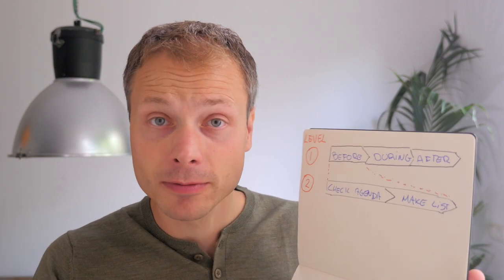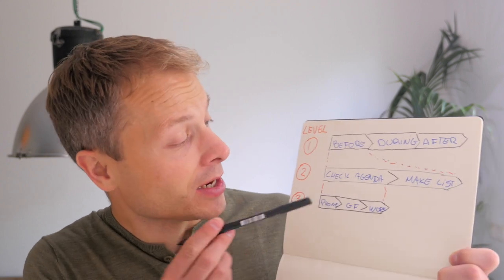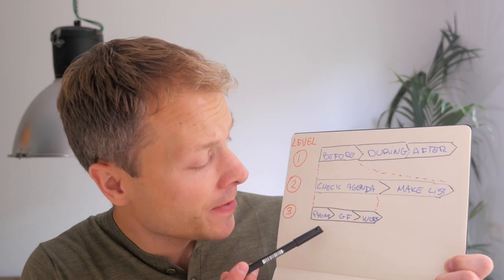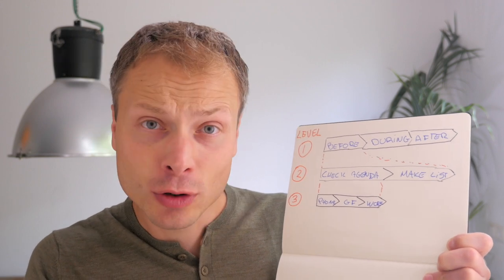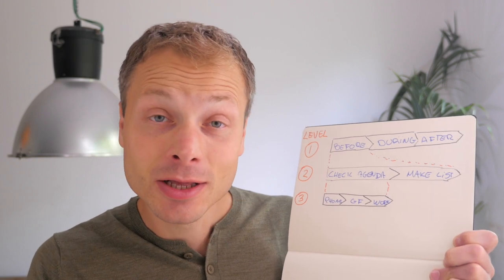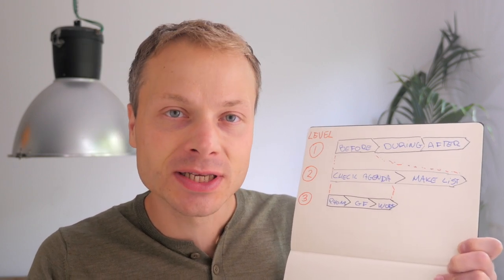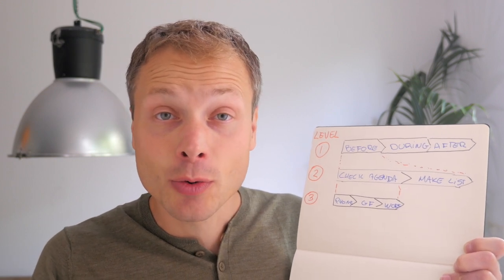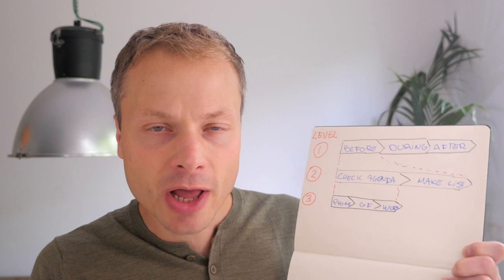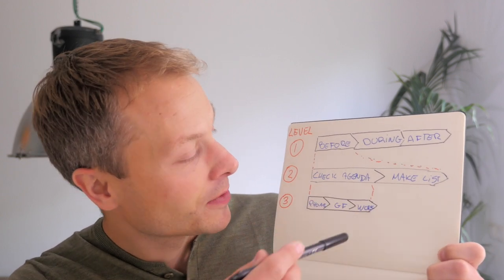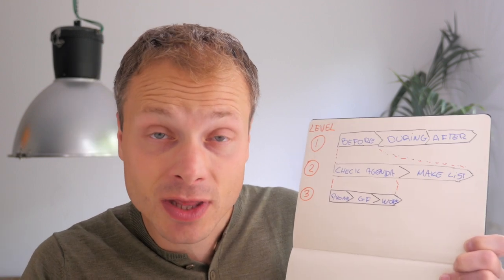Level three is about breaking down level two into even smaller bits. In our grocery example, if we break down 'check agenda,' that activity might contain steps like: first, you check your phone to see your own calendar; then you consult with your girlfriend or boyfriend to see their schedule; and finally, you check what work appointments you have that might prevent you from eating at home. Level three really breaks each activity into its smaller component actions.